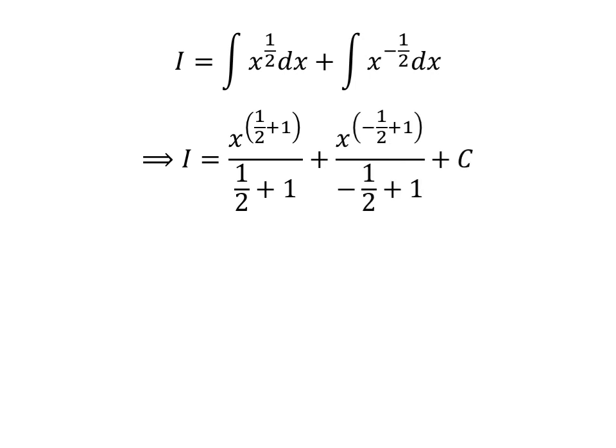The antiderivative of x raised to the power of half is x raised to the power of half plus 1 upon half plus 1. The antiderivative of x raised to the power of minus half is x raised to the power of minus half plus 1 upon minus half plus 1. So I is equal to x raised to the power of half plus 1 upon half plus 1, plus x raised to the power of minus half plus 1 upon minus half plus 1, plus C.